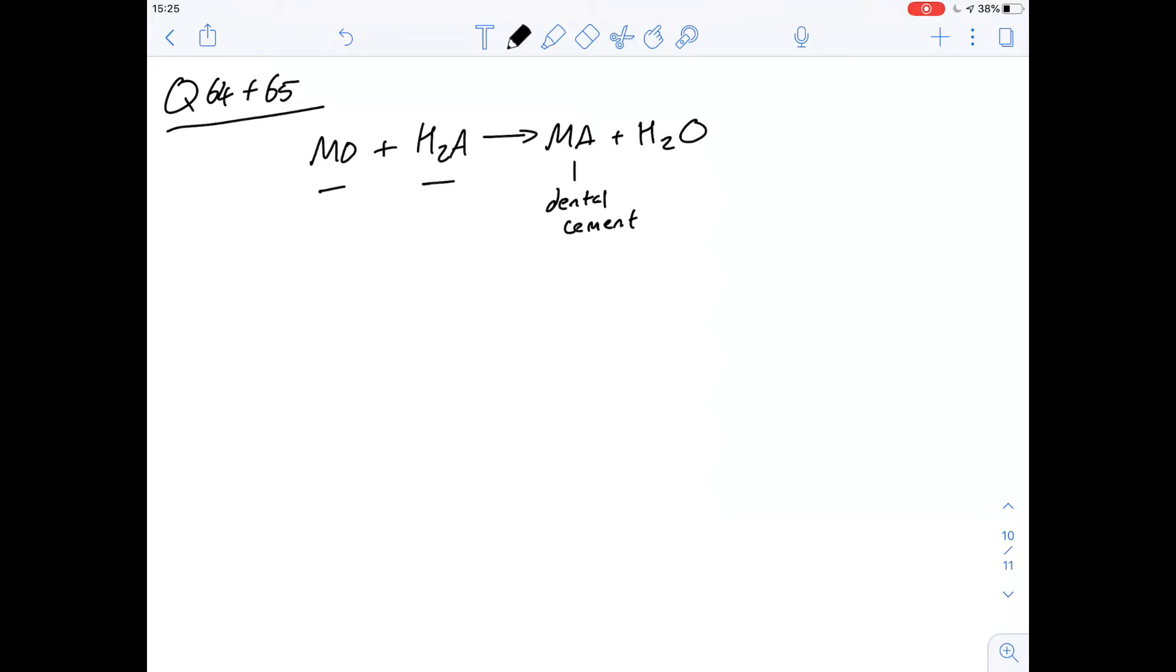Okay so question 64 says which one of the following represents the formula for a dental cement formed by reacting a trivalent metal with a divalent anion. So with valencies you need to remember that they swap over.